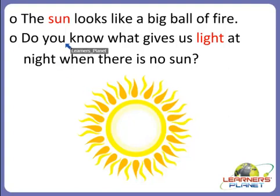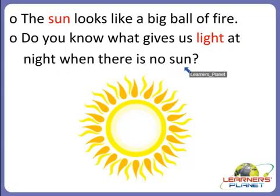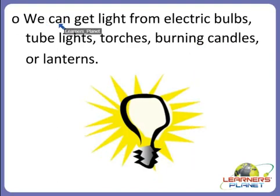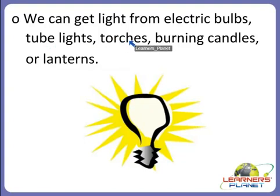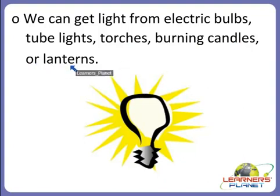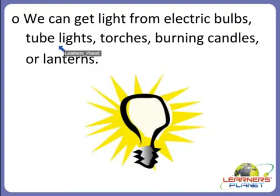But do you know, children, what gives us light at night when there is no sun? We can get light from other sources like electric bulbs, tube lights, torches, burning candles, or lanterns. So at night there is no sun, but we can get light from all these sources.